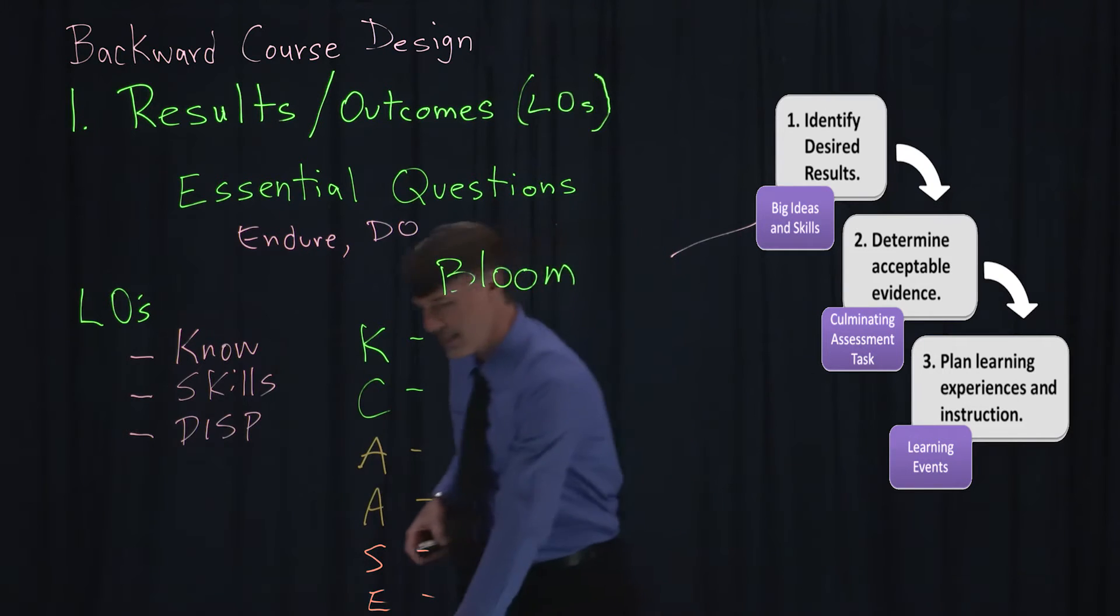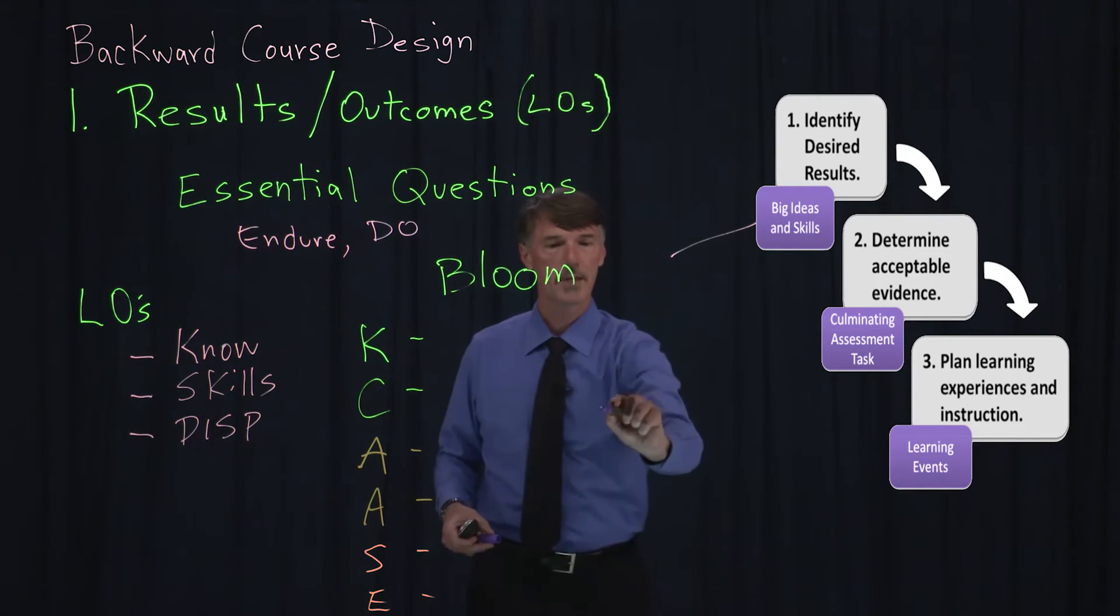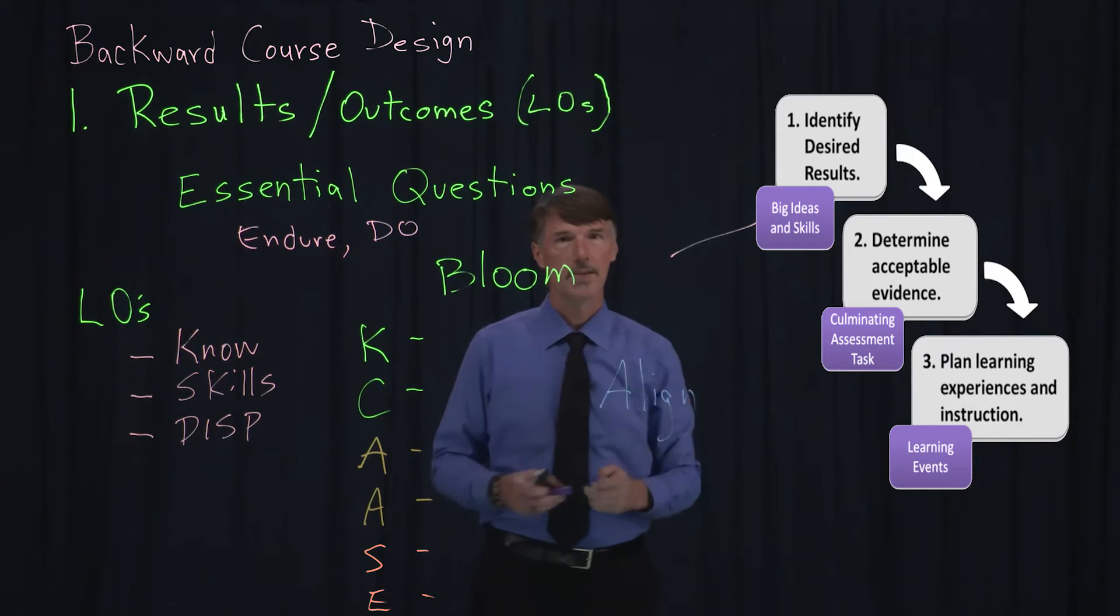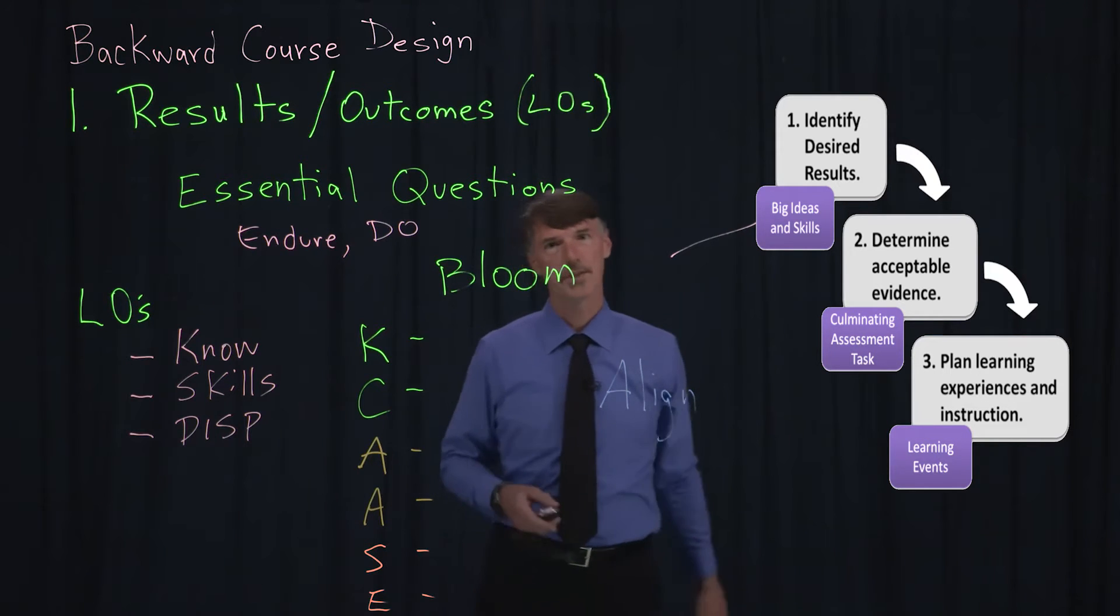We want to make sure that we align these outcomes. That's essential when we are finished writing those. And the alignment should really look at encompassing the university plans, the program learning outcomes and the professional standards.